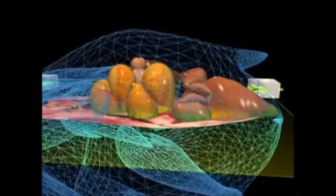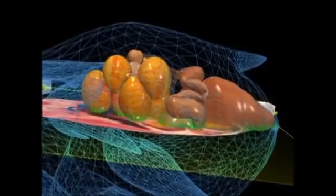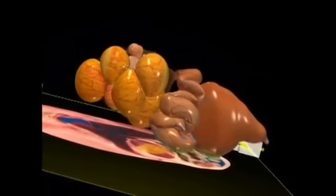The oviduct begins at the ovary, folds back and forth upon itself, and leaves the hen's body through the vent, just below the tail.